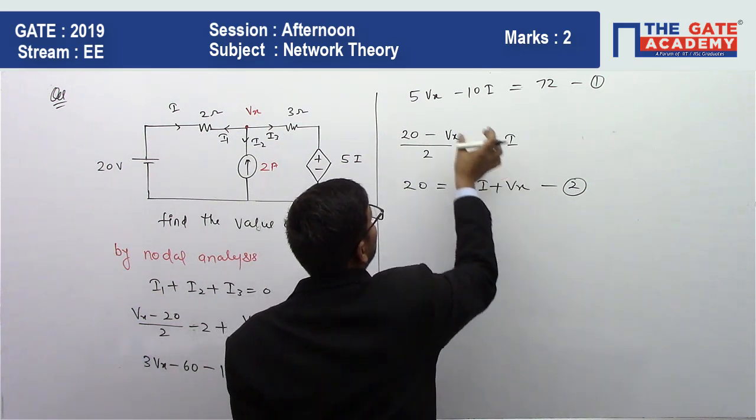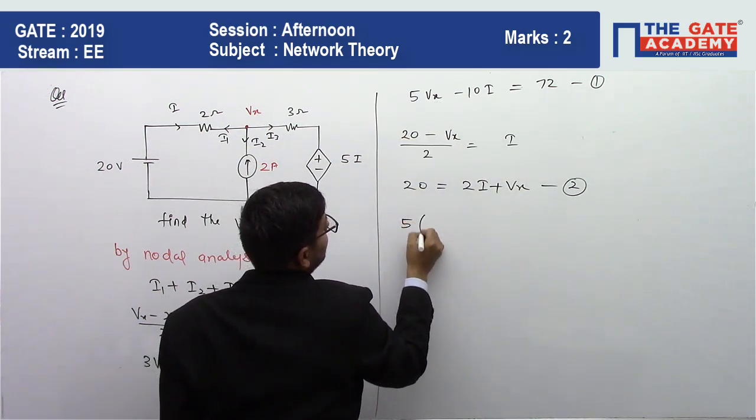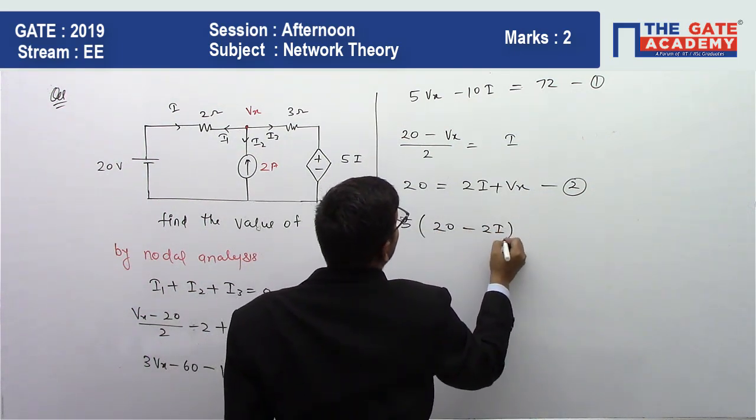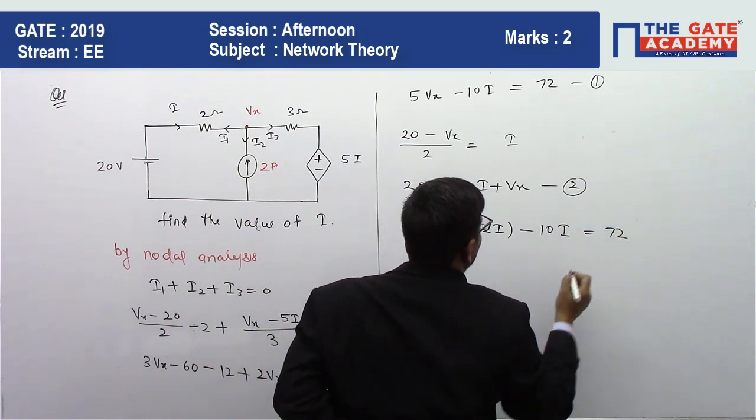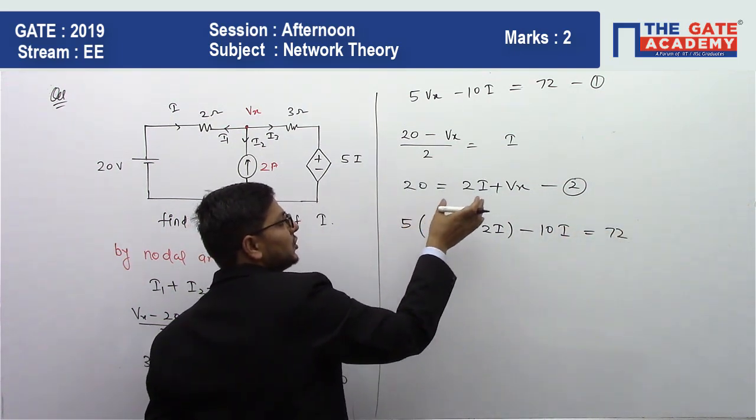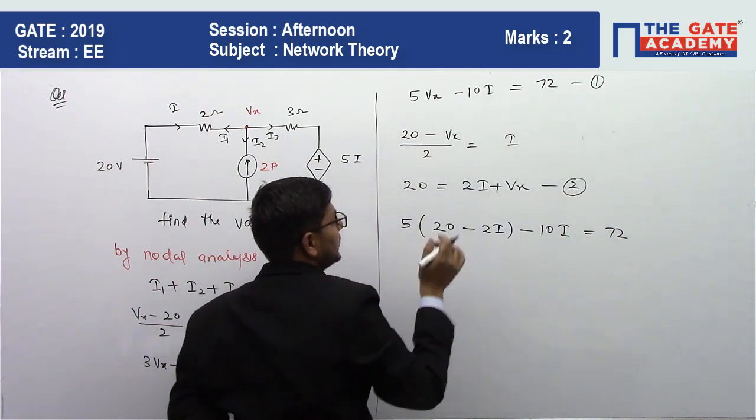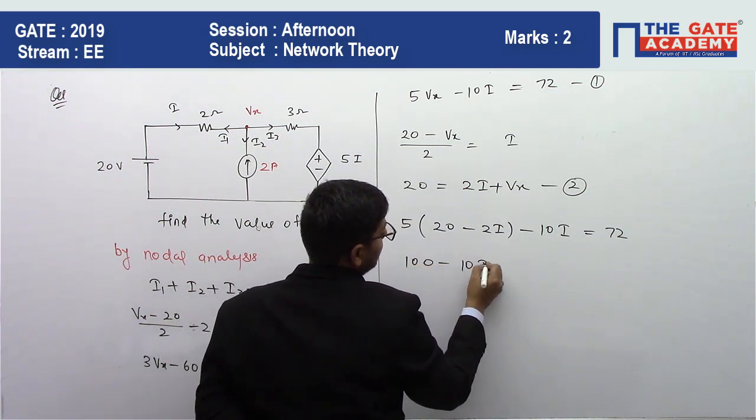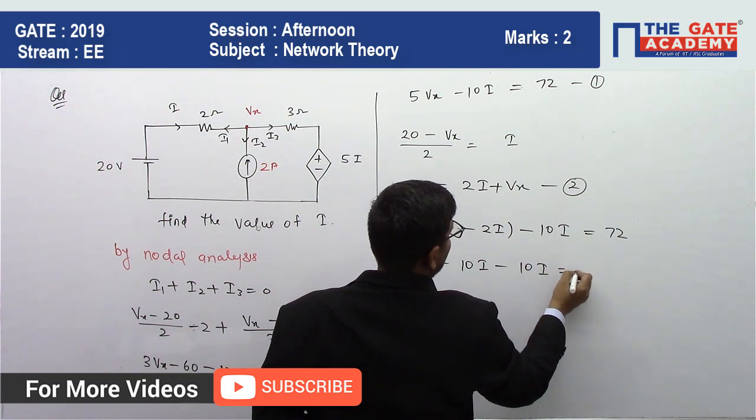This will be equal to 5 times (20 minus 2I) minus 10I equals 72. I'm going to put the value of Vx from equation 2 into equation 1. We can get a value of 100 minus 10I minus 10I equals 72.